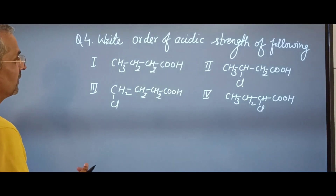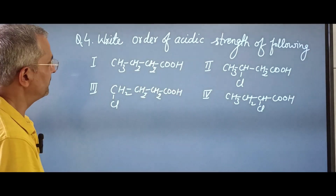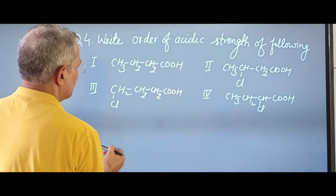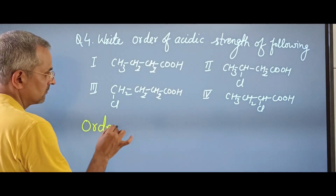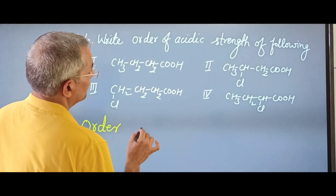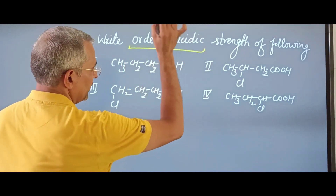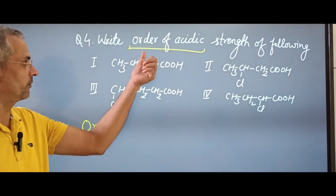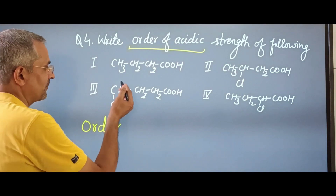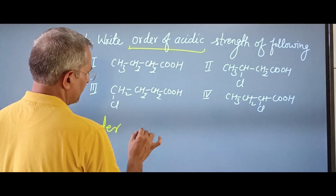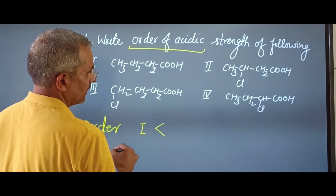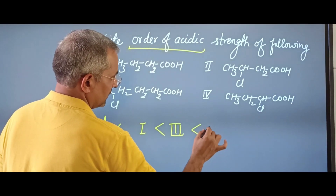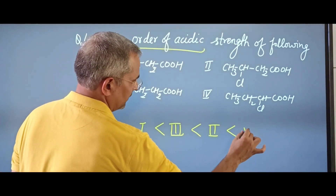The next question asks to write the order of acidic strength of the following. The order can be written as increasing or decreasing depending on what is asked. The order here is: first, then third, then second, and fourth is the most acidic. The minus I effect again plays the key role here.